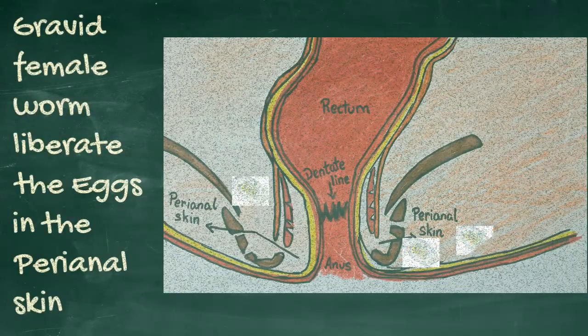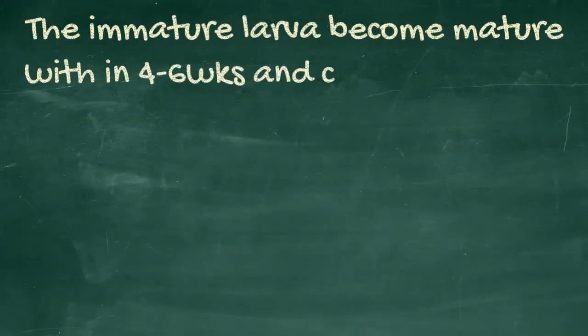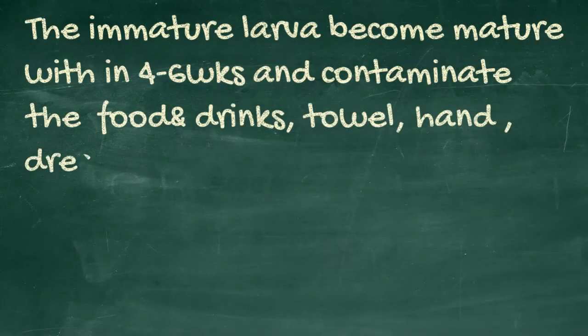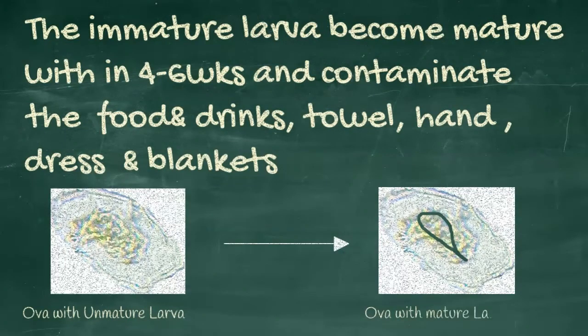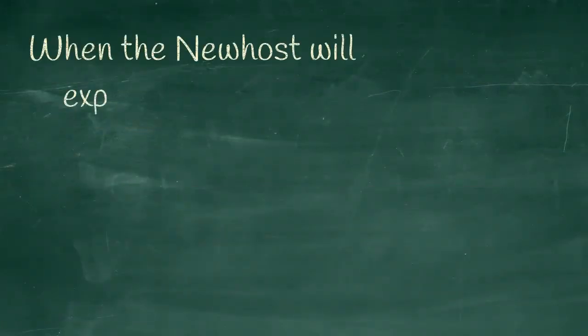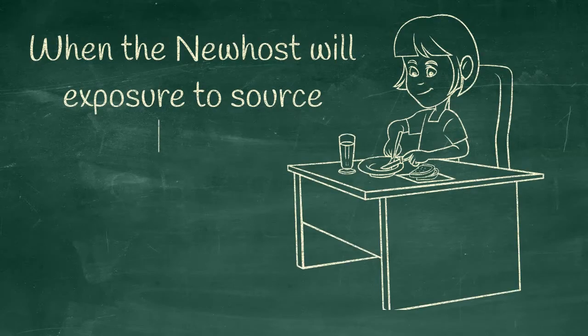Gravid female worm liberates the egg in the perianal skin. The immature larvae become mature within 4 to 6 weeks and contaminate the food and drinks, towel, hands, dress and blankets. When the new host will exposure to the above source of infections, the repetition of the life cycle occurs.